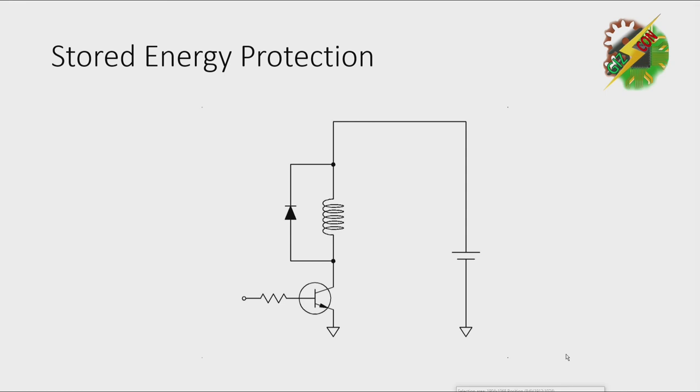By putting a diode here, when we apply a current at the base, it will allow the current at the collector to flow.